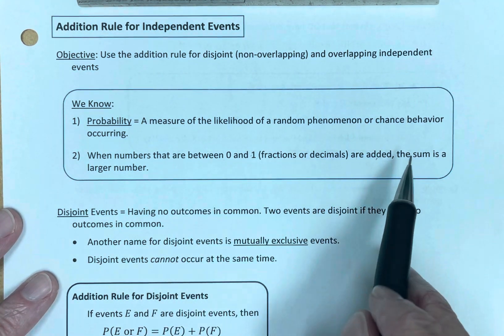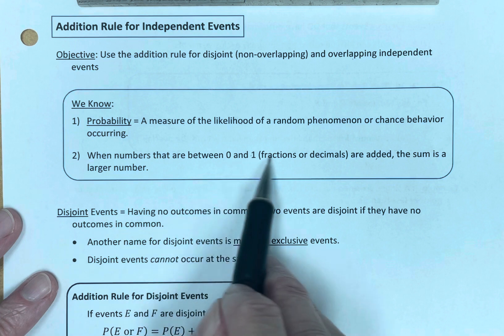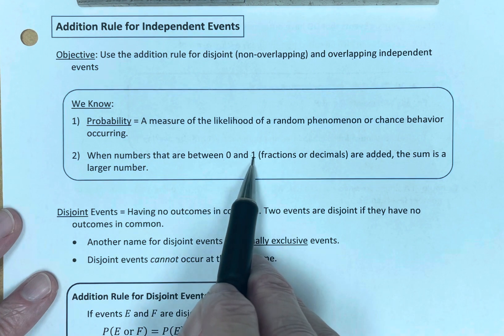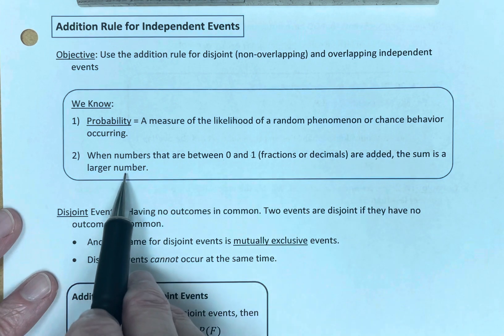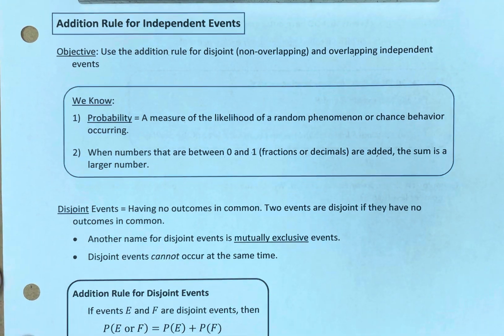Let's remind ourselves what we know that will be useful here. We know what probability is—a measure of the likelihood of a random phenomenon or chance behavior occurring. And we know from grade school that when we have two numbers that are between 0 and 1, fractions or decimals, and we add them, the sum is a larger number. When we add proper fractions or decimals that are between 0 and 1, we get a larger sum. That's going to come into play at the end here.